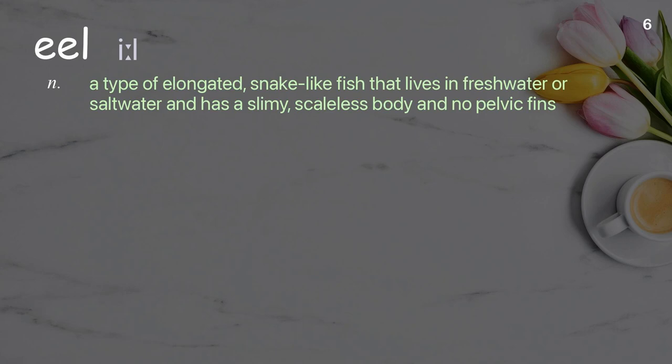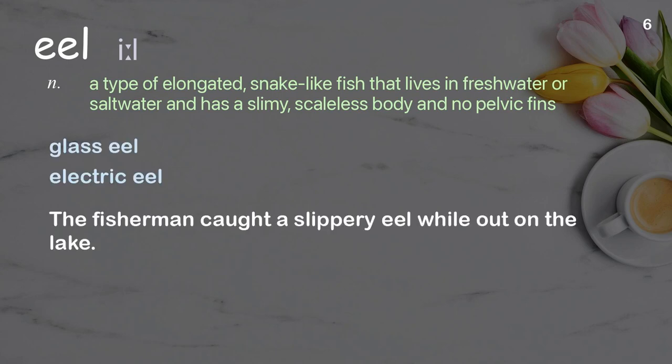Eel. A type of elongated, snake-like fish that lives in freshwater or saltwater and has a slimy, scaleless body and no pelvic fins. Examples: glass eel, electric eel. Sentence: The fisherman caught a slippery eel while out on the lake.